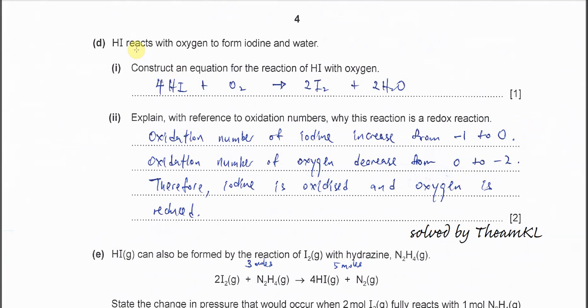Part D. HI reacts with oxygen to form iodine and water. You just follow the statement, construct the equation. HI with O2 form iodine and H2O, balance it. Explain with reference to oxidation number why this reaction is redox. Very easy. You have to at least mention the change in oxidation number.